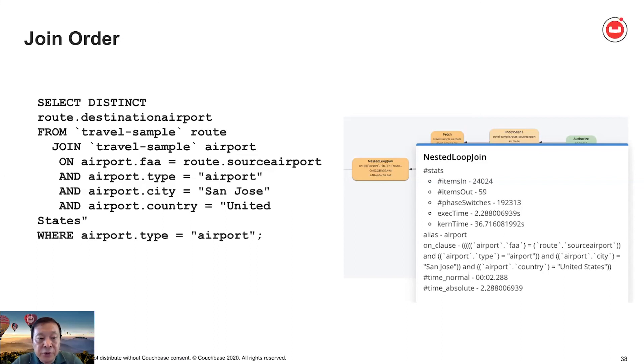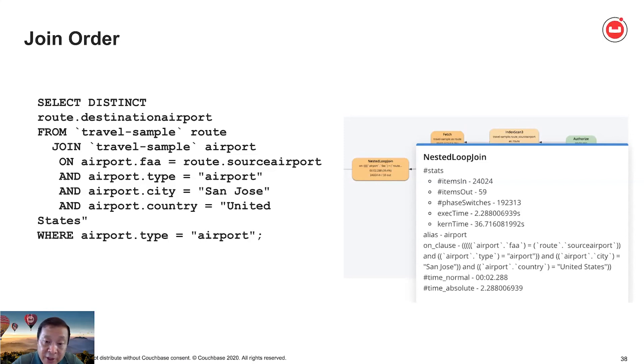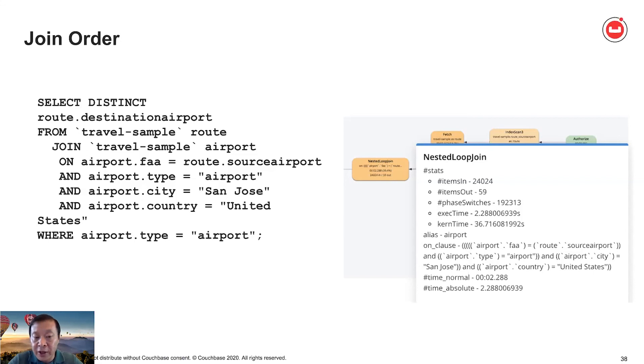This is a current limitation — we don't support join reordering — so you need to be aware that when specifying a join, you want to try to put the smaller side on the left-hand side. This is especially true when you have a long-running query. You also want to experiment with hash join as discussed in the previous section, and examine the join order to ensure if you're using nested loop join the smaller side is on the left — that should improve your query performance.